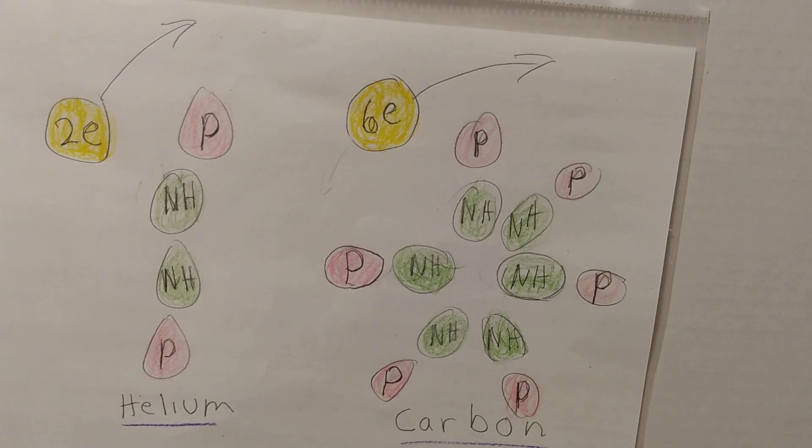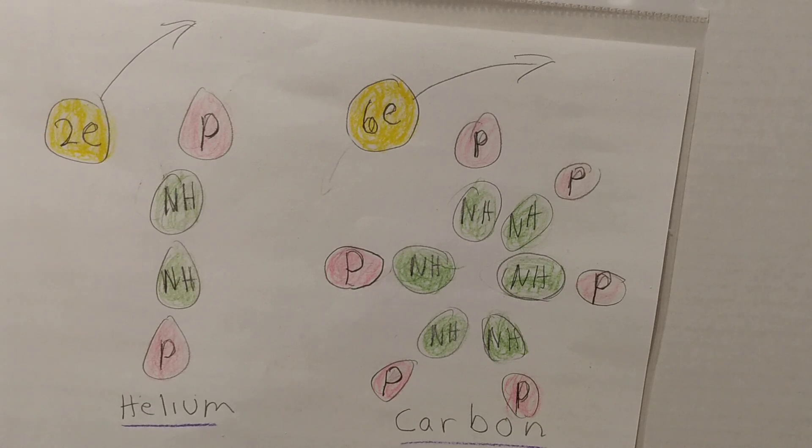Deuterium, an isotope of hydrogen, has one neutron paired with one proton in its nucleus. Deuterium forms stronger chemical bonds than hydrogen.